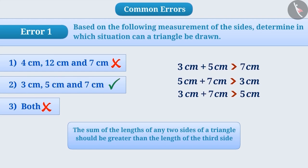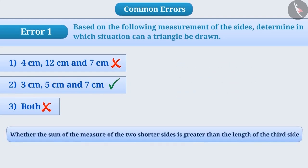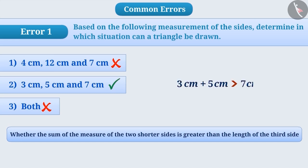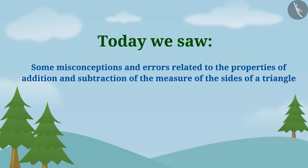It is not necessary to check all situations. We can also check whether the sum of the two shorter sides is greater than the longest side. In option 1, the sum of the two shorter sides, 4 cm plus 7 cm, is less than the larger side, 12 cm — so a triangle cannot be drawn. In option 2, the sum of the two shorter sides, 3 cm plus 5 cm, is more than the larger side, 7 cm — so we can draw a triangle. Today we saw the misconceptions and errors related to the sum of the measurements of the two sides of a triangle.